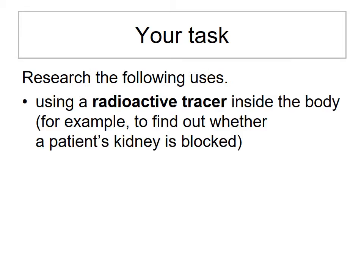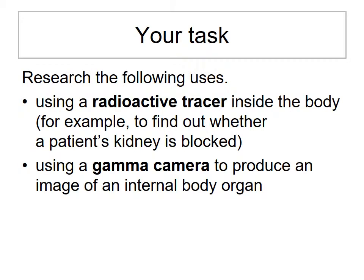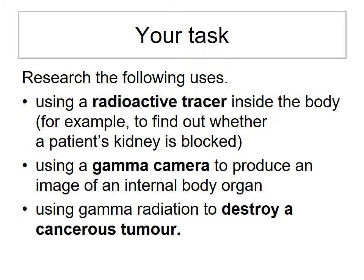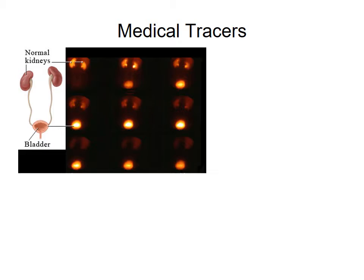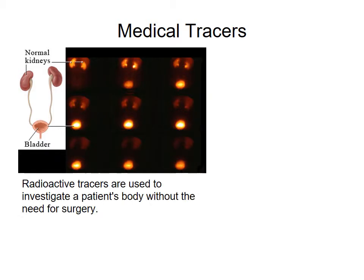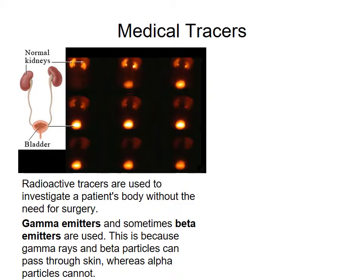Your task is to research the following uses: using a radioactive tracer inside the body, use of gamma cameras to produce images, or the use of gamma radiation to destroy cancerous tumours. What you should have discovered is that radioactive tracers are used to investigate a patient's body without the need for surgery. Gamma or beta emitters are usually used, because alpha particles can't get through the body, so a detector outside the body wouldn't be able to see any radiation.